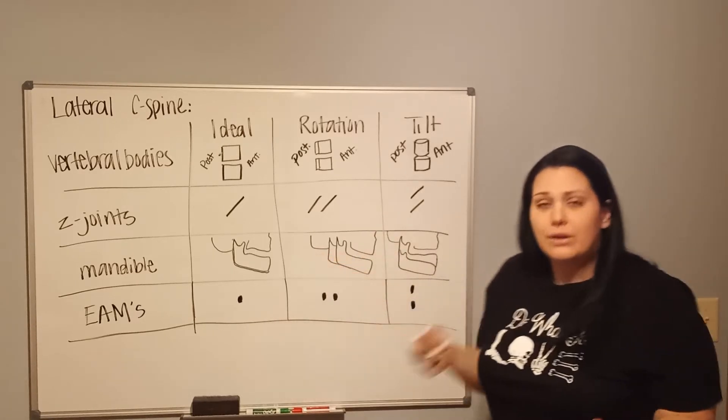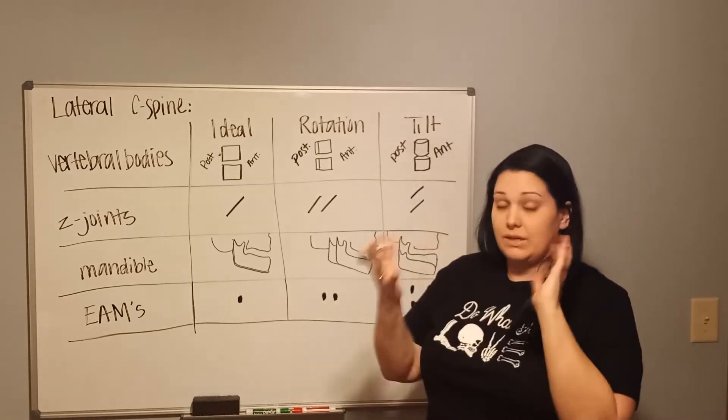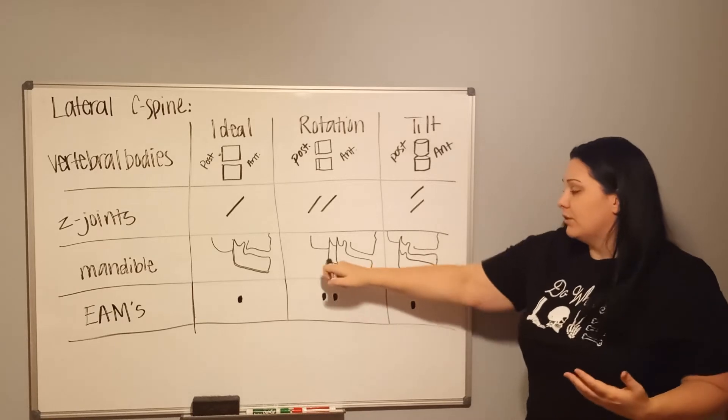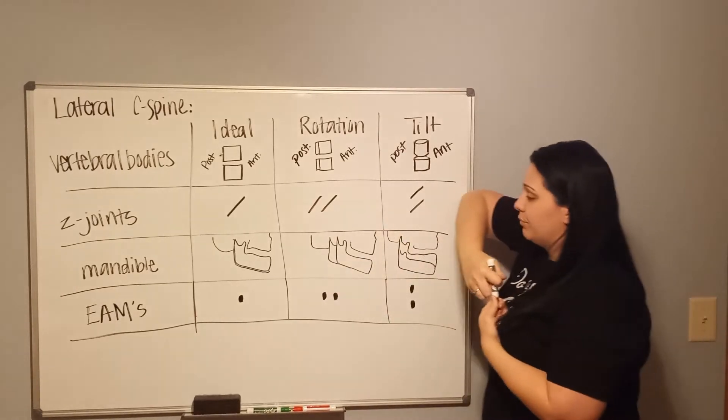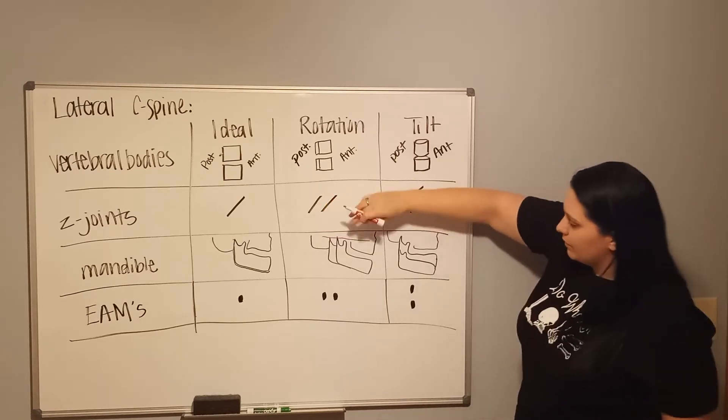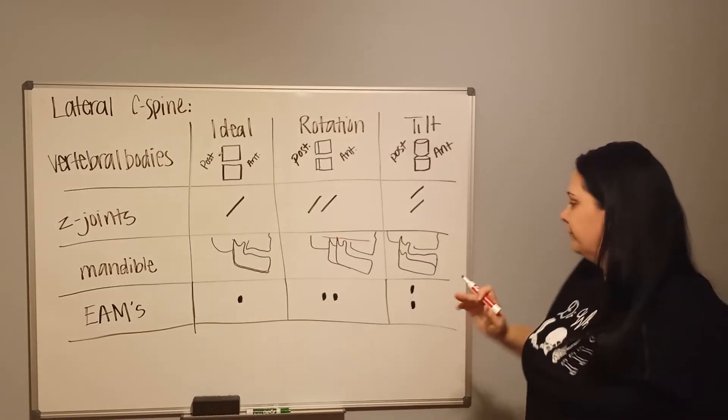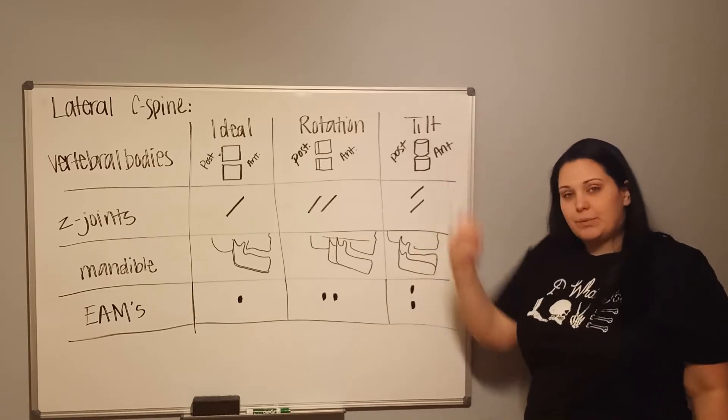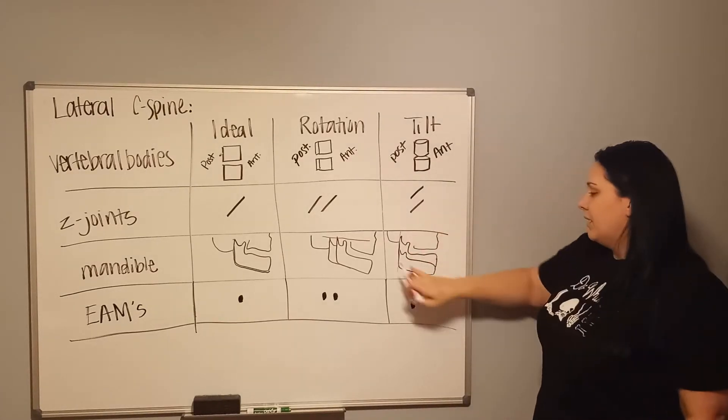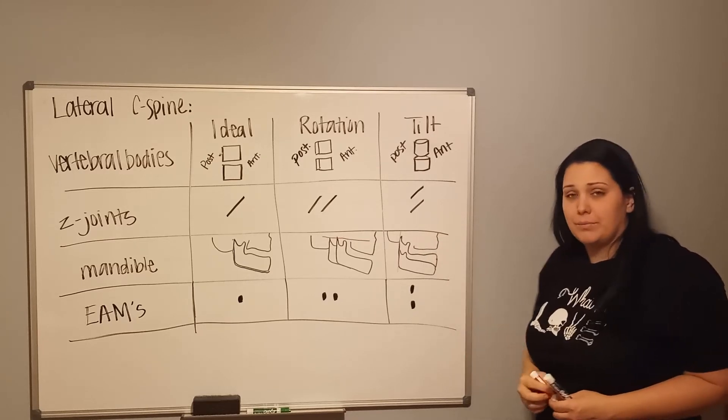Just like everything else we've talked about so far, you can tell rotation or tilt displacement based off of how each side, the bodies and rami of the mandible, how are they related to one another. If one's anteriorly or posteriorly situated but they aren't living on the same plane, and by that I mean I could take a horizontal line and draw it over the tops of them, if they both hit that line, that would be not tilt but rotation.